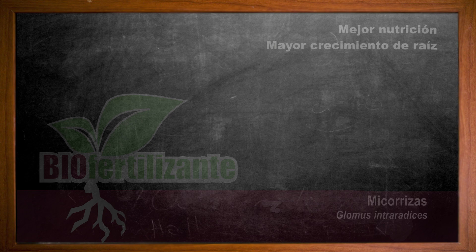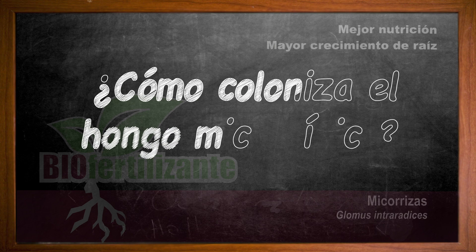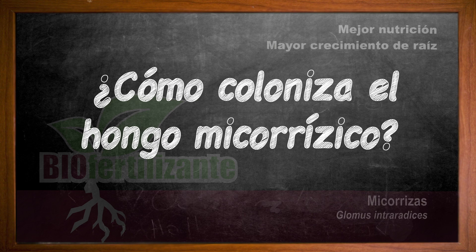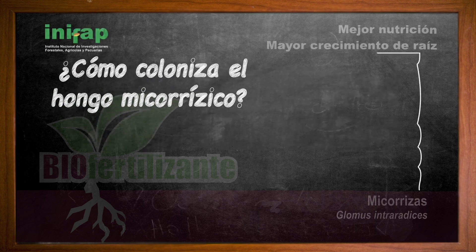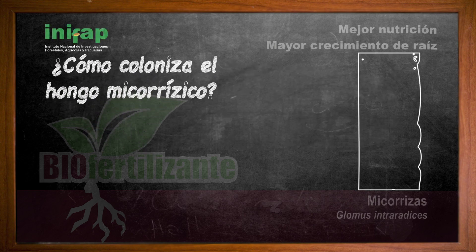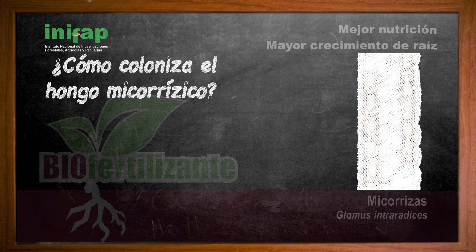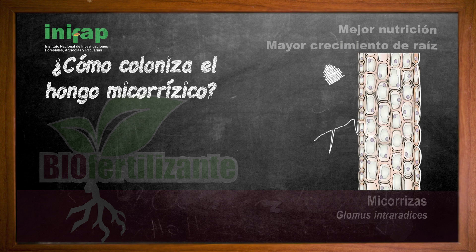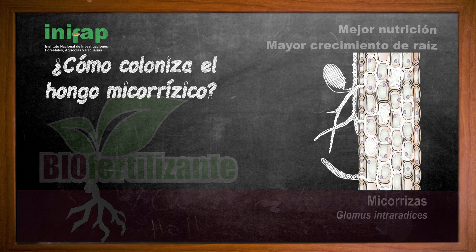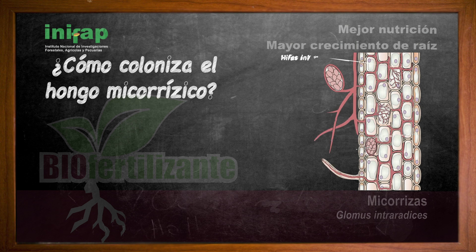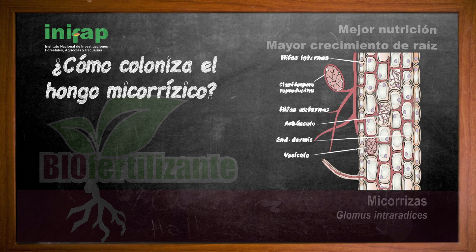¿Cómo coloniza el hongo micorrísico? Cuando la planta se encuentra bajo estrés nutricional o de agua, la raíz emite una señal proteínica y se establece una comunicación entre ella y el hongo, de manera que favorece la germinación de la espora generando hifas, que se posan sobre la raíz y se introducen dentro de ella.